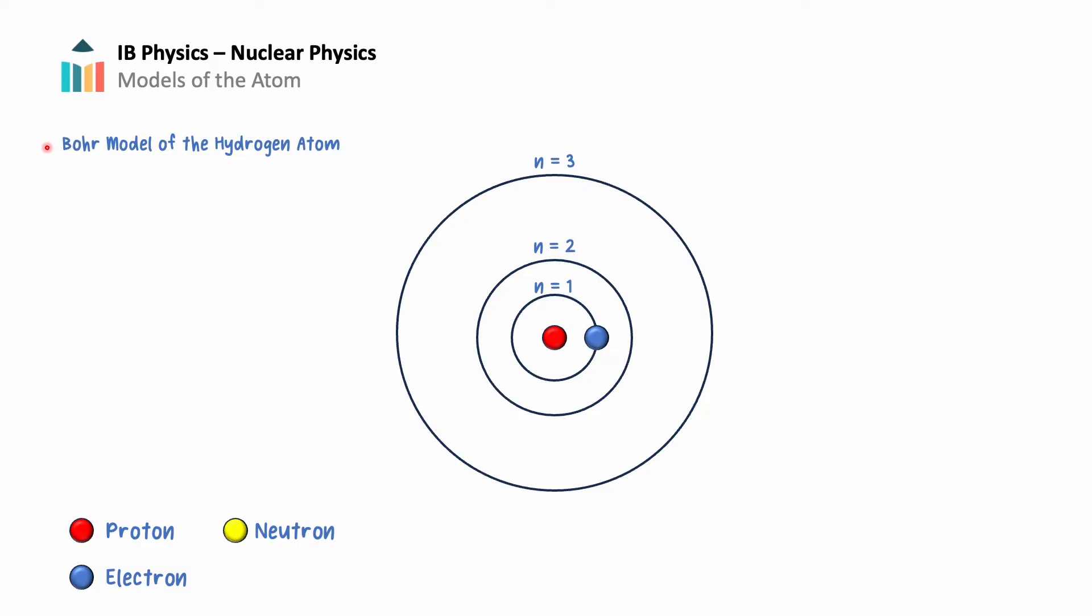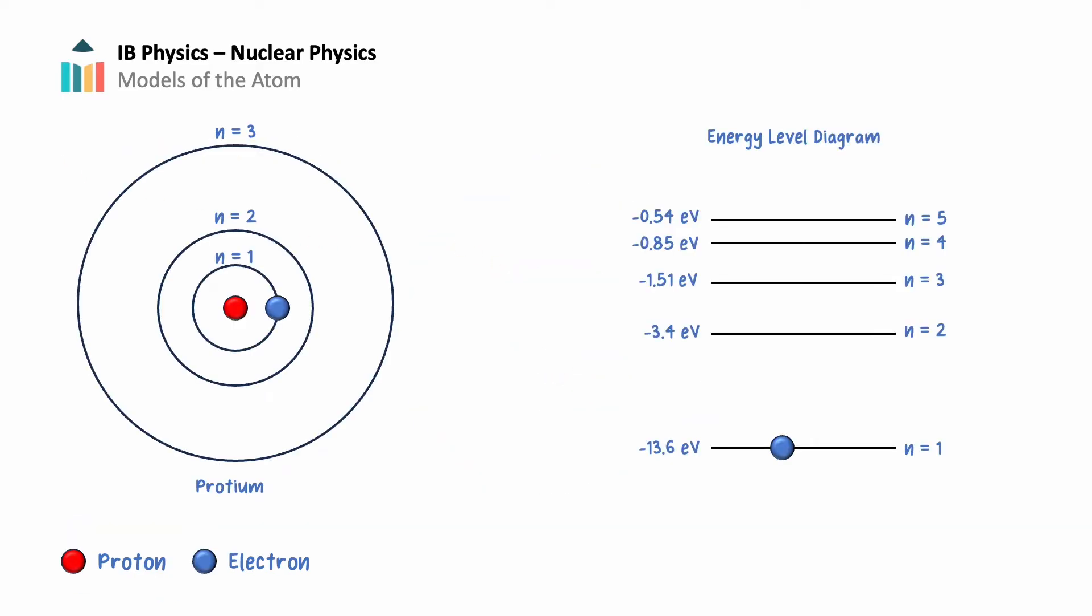This may look familiar to you as it is often the first model to be introduced to students. The atom still has a positively charged nucleus containing protons and neutrons, but compared with Rutherford's model, Bohr suggested the revolutionary idea that electrons jump between energy levels or orbits in a quantum fashion. That is, without ever existing in an in-between state. In other words, electrons cannot occupy just any space around the nucleus. In fact, they can only occupy certain orbits. These orbits correspond to different amounts of energy or energy levels.